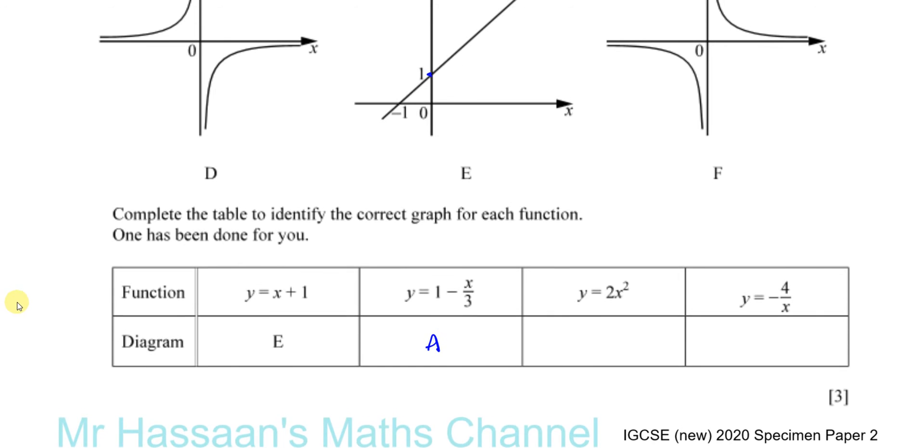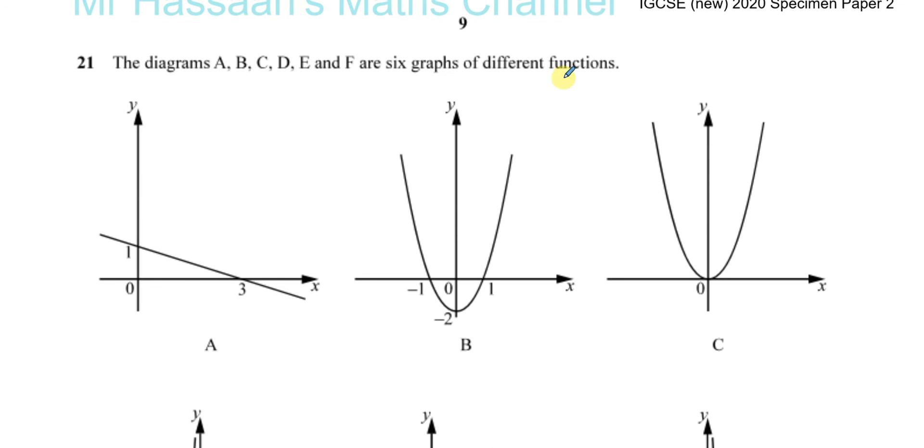The equation is y = 2x². Now, y = 2x²—when x is 0, y is 0. It must pass through the origin. This doesn't pass through the origin and this does, so this is the one that must be y = 2x², which is C.